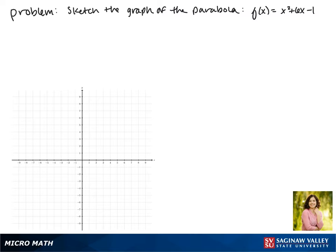Today we'll be sketching the graph of the parabola f(x) = x² + 6x - 1. Note that the leading coefficient is positive, so this parabola will open upward.